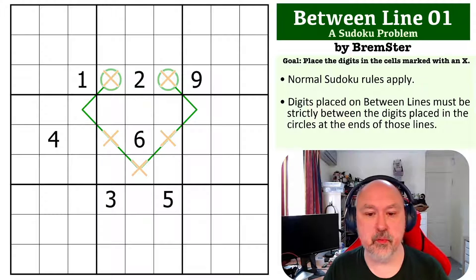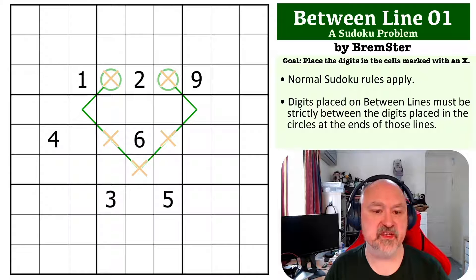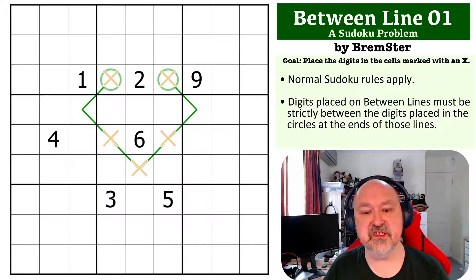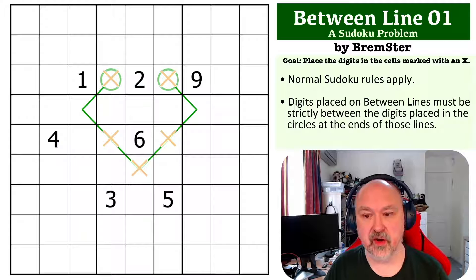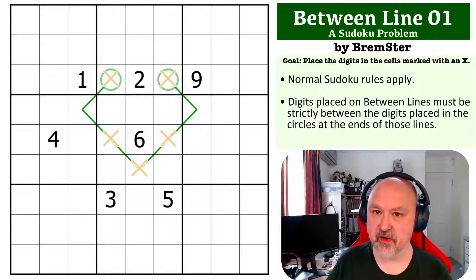Between lines work by requiring that digits placed on the line must be strictly between the digits placed in the circles at the end of the line. You must place the digits into the Xs that are provided on the grid. Don't worry about placing digits anywhere else. They're not required.